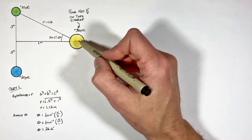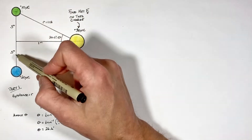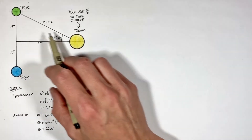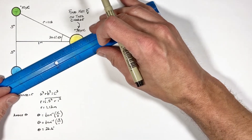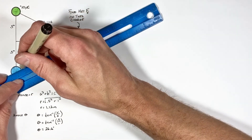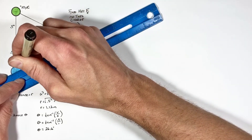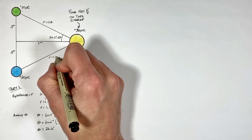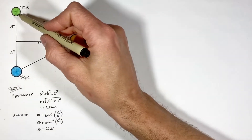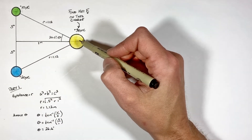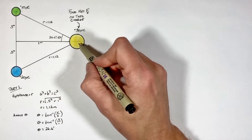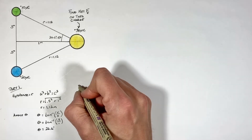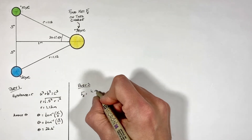Having worked out the geometry of this triangle, we can now turn to Coulomb's law to find the actual force. Because this dimension is the same as this other dimension, the distance between these two charges is going to be the same as the distance between the other two charges. So now that we've worked out all the geometry, we can move on to actually applying Coulomb's law to this problem.